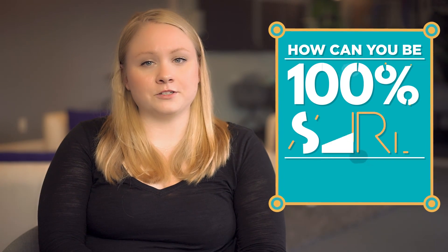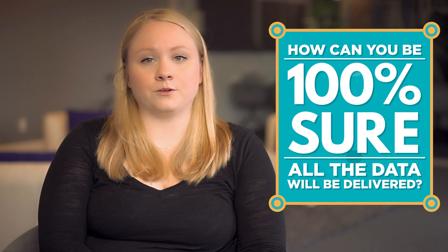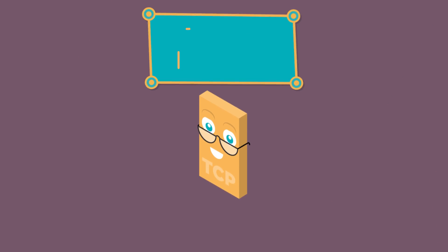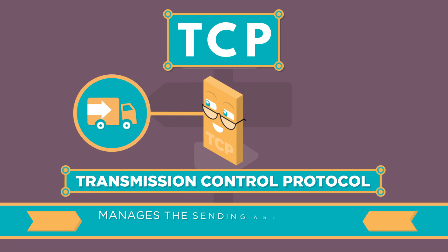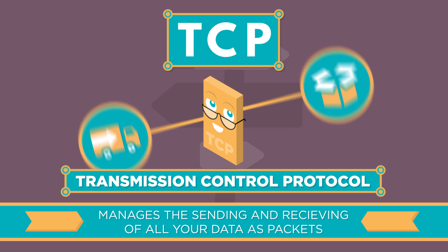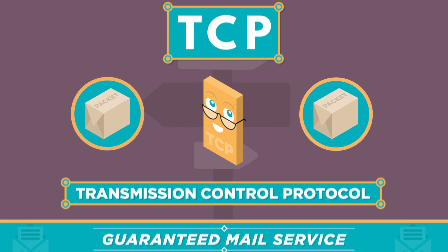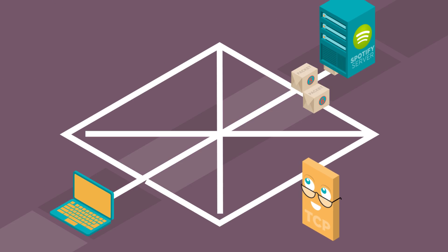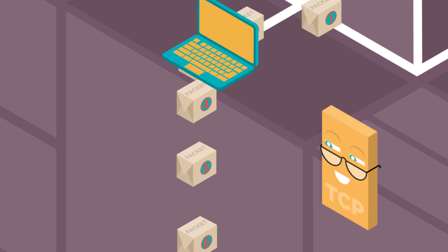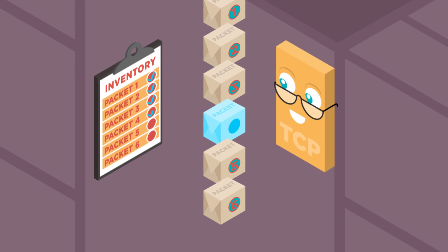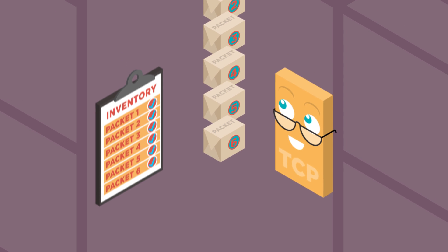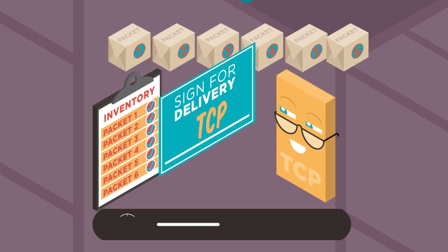Now, what if you want to request some data and not everything is delivered? Say you want to listen to a song. How can you be 100% sure all the data will be delivered so the song plays perfectly? Introducing your new best friend TCP, Transmission Control Protocol. TCP manages the sending and receiving of all your data as packets. Think of it like a guaranteed mail service. When you request a song on your device, Spotify sends a song broken up into many packets. When your packets arrive, TCP does a full inventory and sends back acknowledgements of each packet received. If all packets are there, TCP signs for your delivery and you're done.